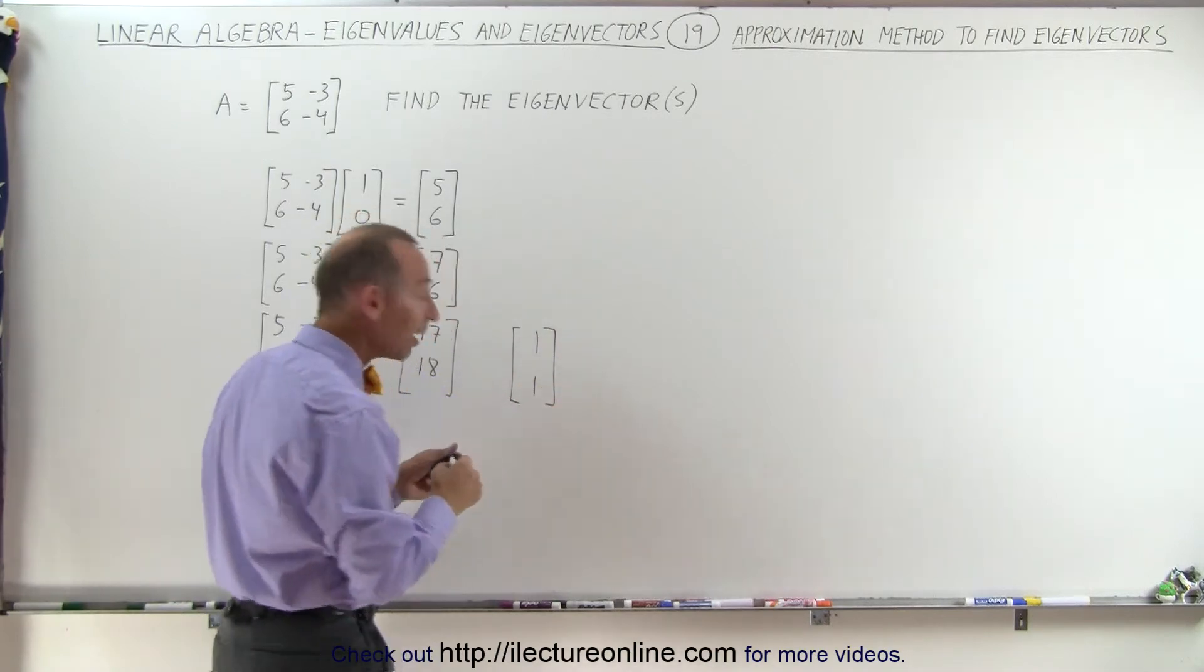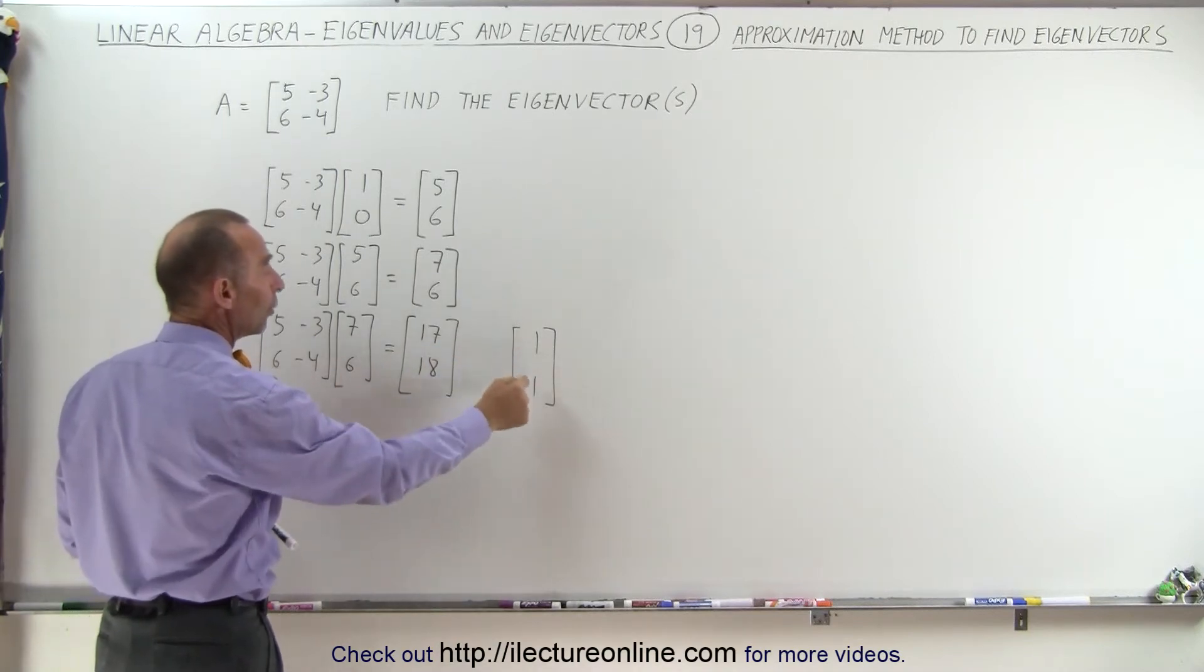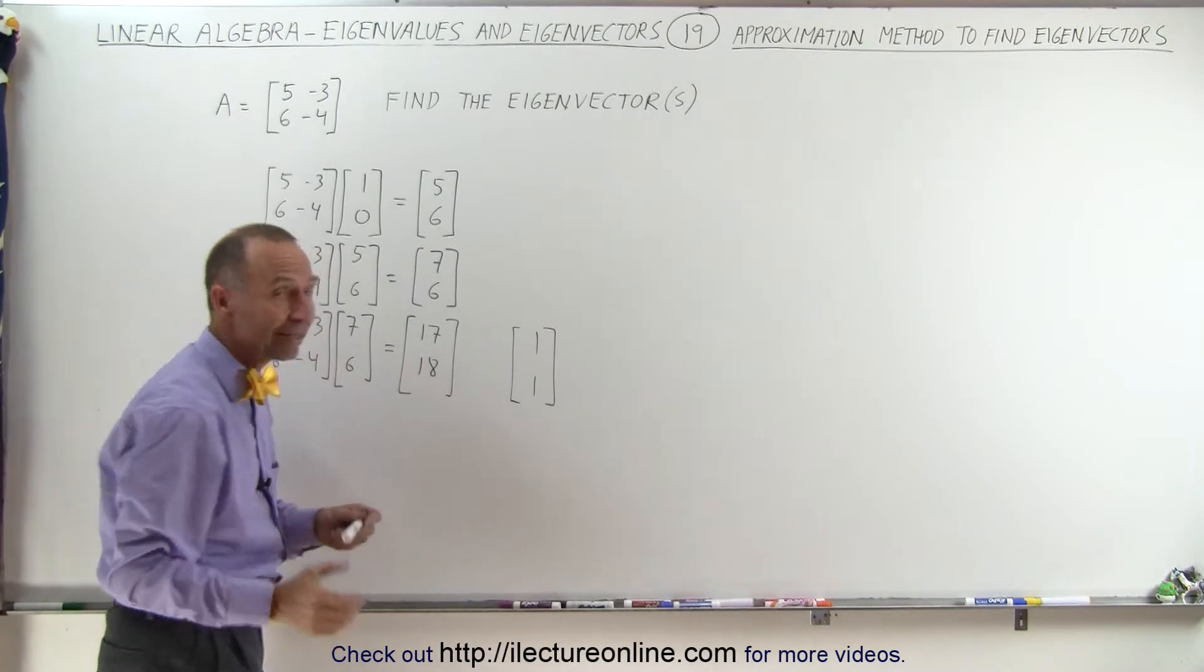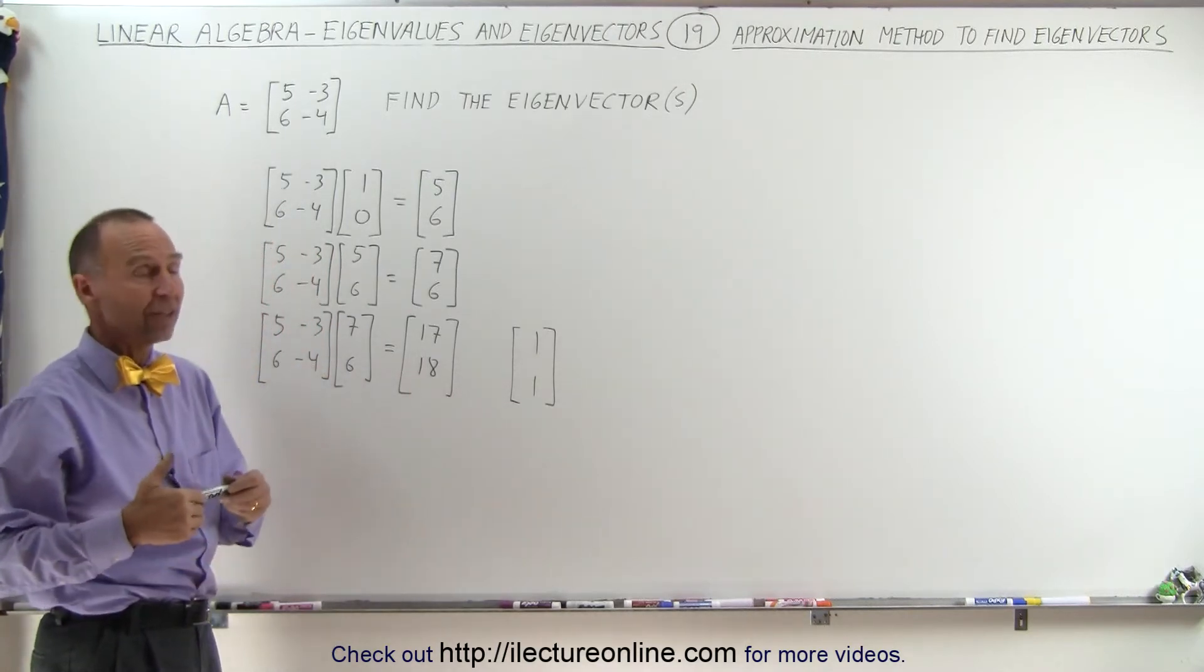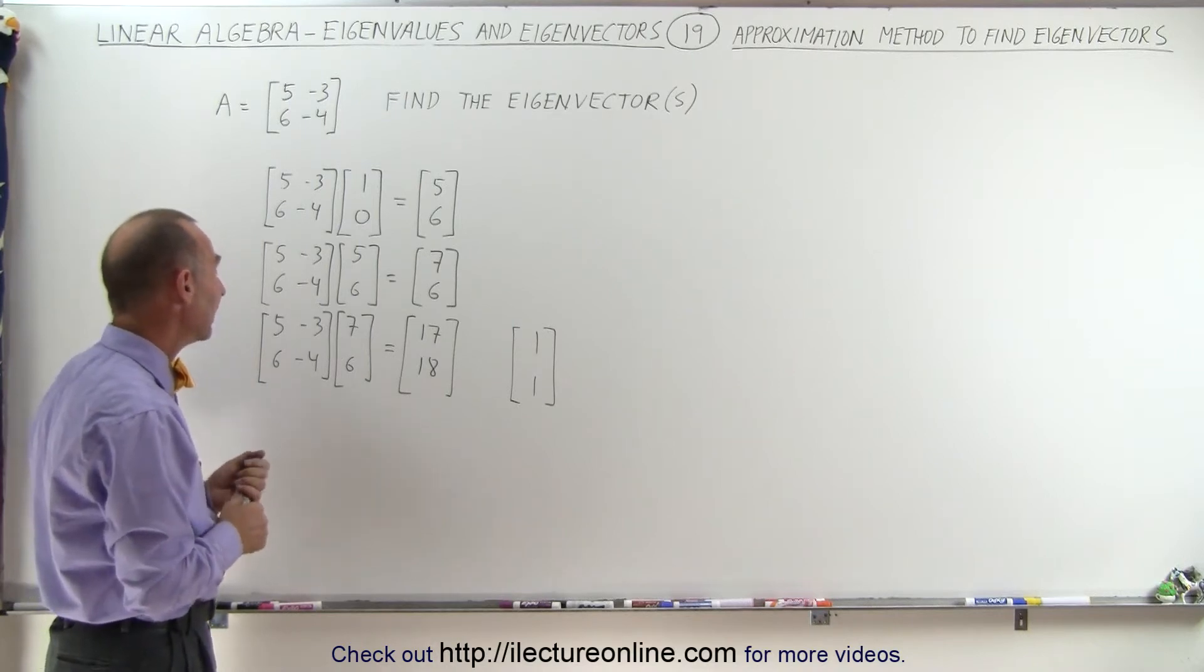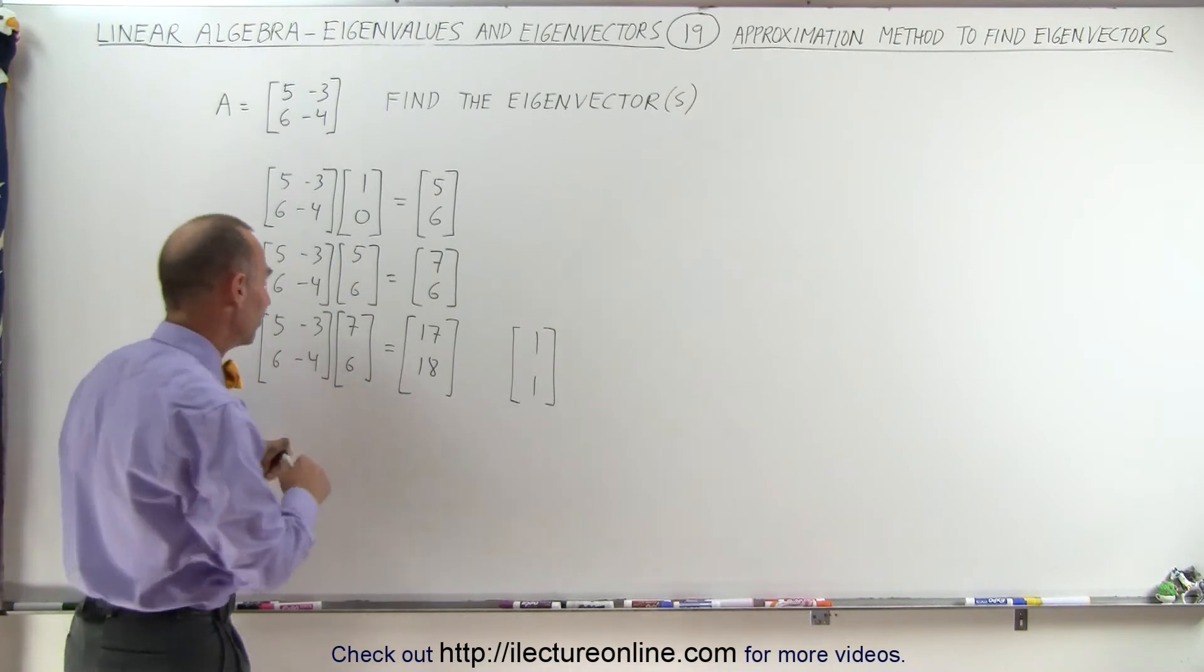At this point, you say, well, I've gone far enough. If I now multiply this matrix times 1 over 1 or 1, 1 for the x value and 1 for the y value in my vector, and I get 1, 1 again, or at least a multiple of 1, 1, a ratio of 1, 1, then I know I've definitely found the correct eigenvector. But let me go one more step and see what happens.